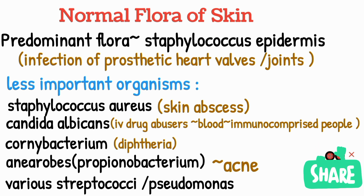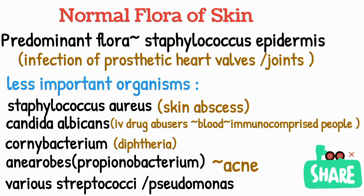Corynebacterium causes diphtheria. Propionibacterium, an anaerobe, is responsible for the pathogenesis of acne on the skin and face. Streptococcal species and Pseudomonas also play roles — Pseudomonas notably in UTI, and streptococcal species in various skin infections. These are all the normal flora of the skin.